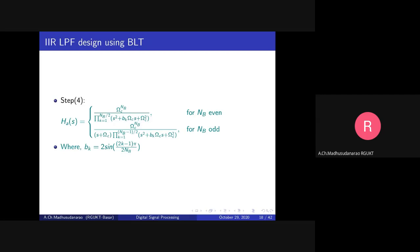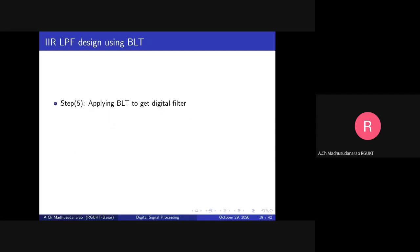Once we have the analog low pass filter H(s), our next target is to apply bilinear transformation to get the corresponding digital filter. We apply bilinear transformation by replacing s with (2/T) × (1 - z^-1)/(1 + z^-1).